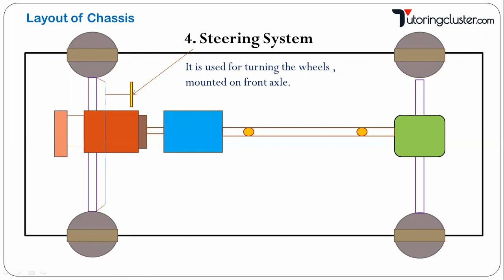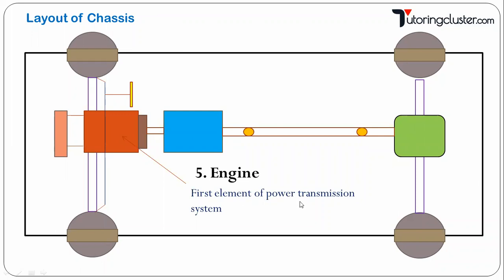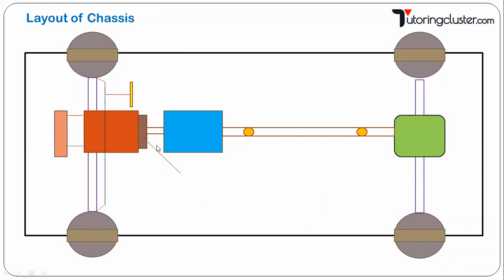Now the orange part in the diagram — that is the engine. The engine is the heart of the vehicle. It is an internal combustion engine which converts the chemical energy of the fuel into mechanical power at the crankshaft. It is the first element of the power transmission system — obviously, the engine is a power-producing device and this power has to be transferred to the wheels through the power transmission system.